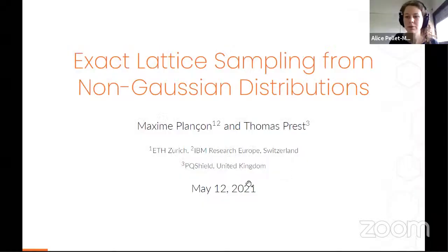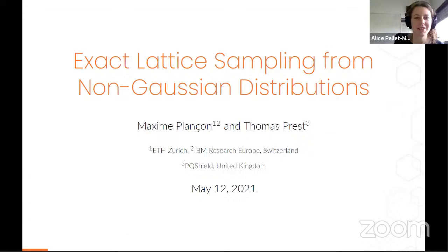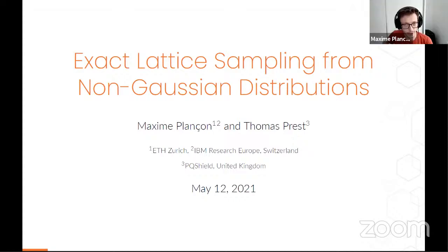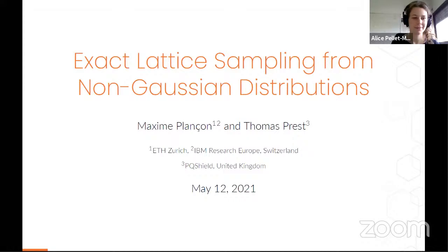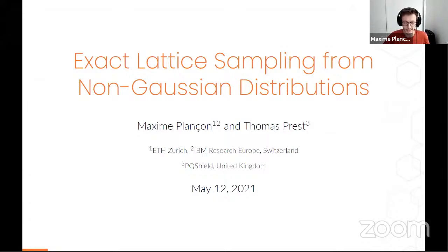The next talk is on 'Sampling Non-Gaussian Distributions on Lattices,' a work by Maxim Plancon and Thomas Prest. Maxim is going to give the talk. We are given a basis of a lattice and a target vector in the space, and we will sample from some distribution defined on the lattice. For cryptography, we want D to be independent of the basis, the center of D to be the target, and the standard deviation to be as small as possible.